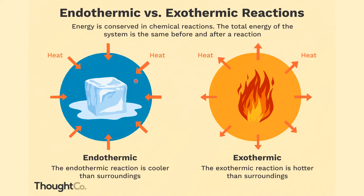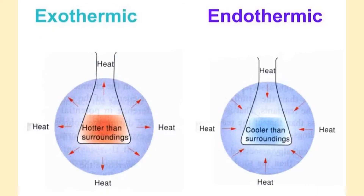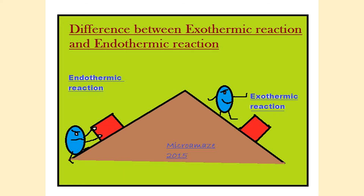Here's another way to look at it. Endothermic reactions — heat is going in. Exothermic reactions — heat is going out. In an endothermic reaction, heat is going in and being absorbed. In an exothermic reaction, heat is going out and being released. Think of it this way: an endothermic reaction is like pushing something up a hill — the object is moving, but you're having to put energy in all the time. Whereas in an exothermic reaction, you give that object a little shove and it moves down on its own. Endothermic — you're putting energy in; exothermic — energy is coming out.